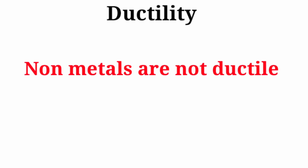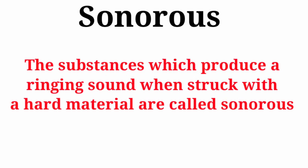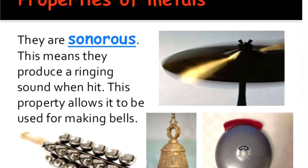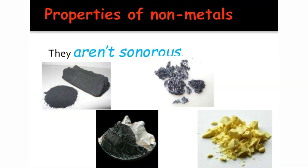On the other hand, non-metals are not ductile. Next property is sonorous. The substances which produce a ringing sound when struck with a hard material are called sonorous. Metals produce a distinct ringing sound when they hit the floor or are struck with a hard material, so metals are sonorous. Non-metals do not produce any kind of ringing sound, so non-metals are not sonorous.